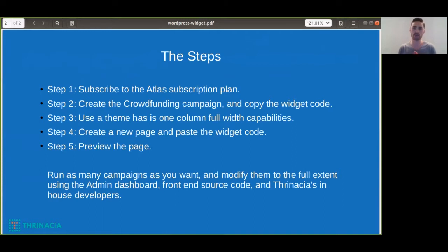Once you've chosen a theme that has those capabilities, you can create a new page and paste the widget code. It should paste on there nicely full width onto the page. Then you can preview the page and watch the crowdfunding campaign running. You can run as many crowdfunding campaigns as you want and modify them using the administrator dashboard, the front-end source code, and through Nation's in-house developers at an hourly rate, so you can make the campaign UI completely fluid with the entire website. Stay tuned and watch this demo on how to add the crowdfunding campaign to your WordPress website.